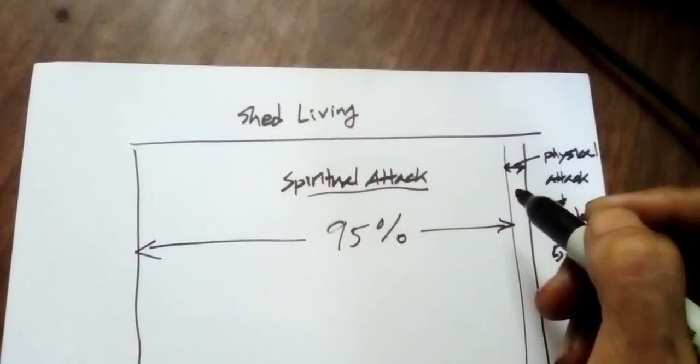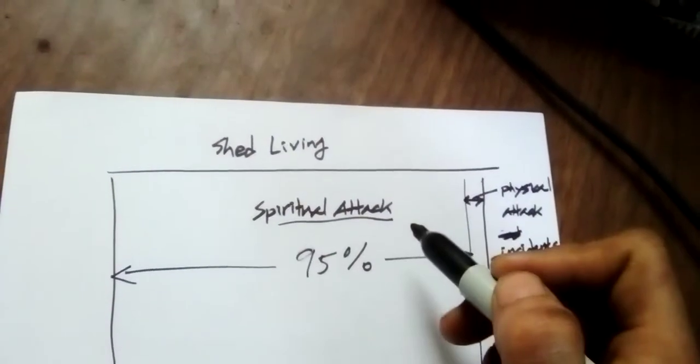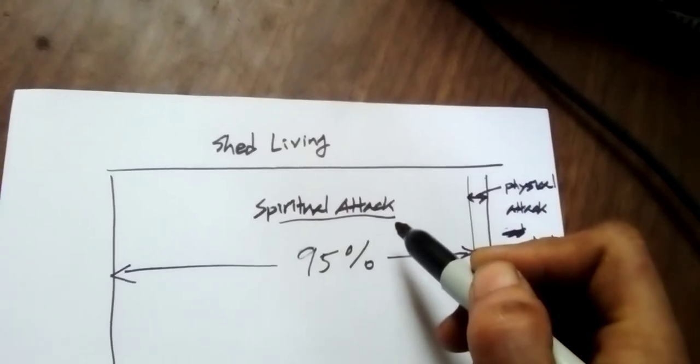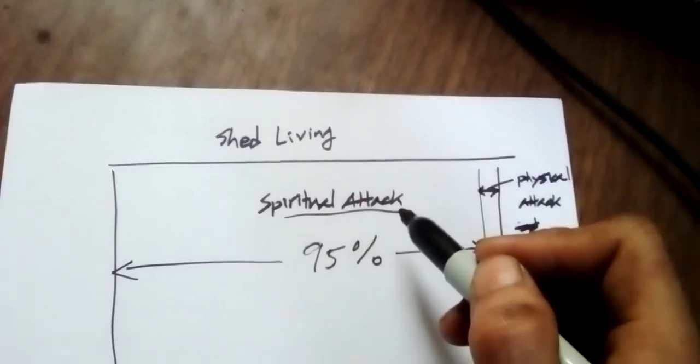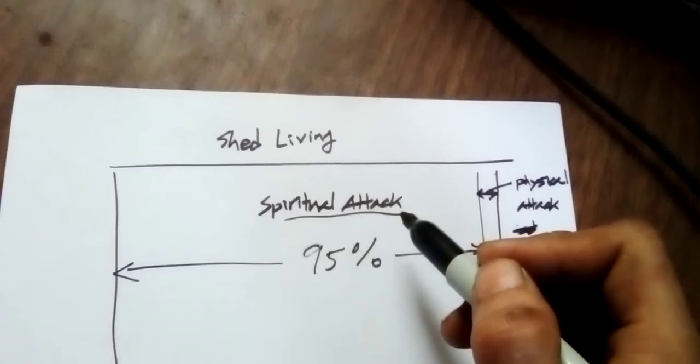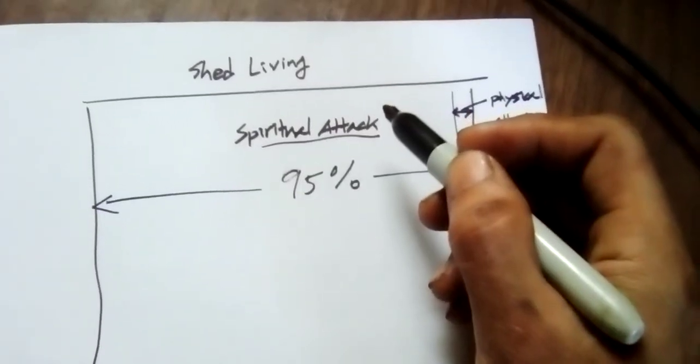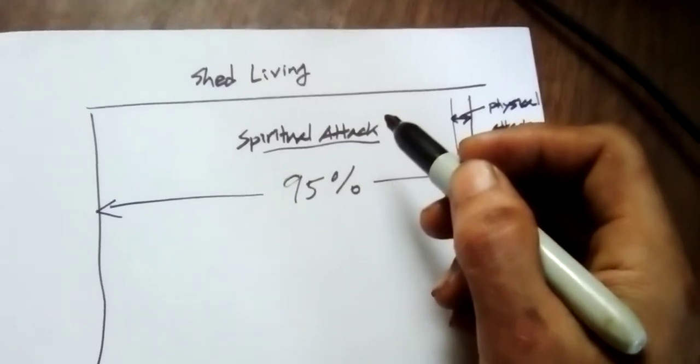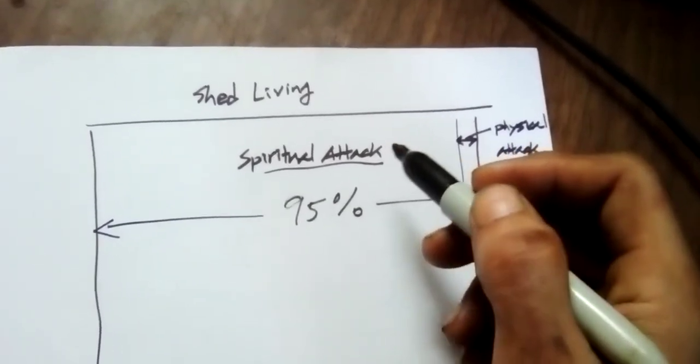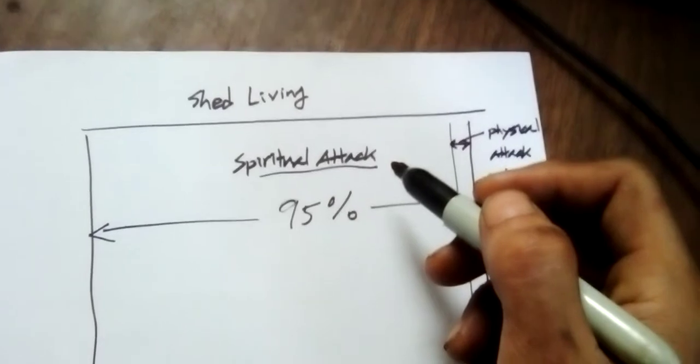It's virtually uncontrollable. Because whenever you feel negative or do something, anything wrong that is against God's will, even smallest things, even just for matter of few seconds. The devil, the demons, the devil will attack you.